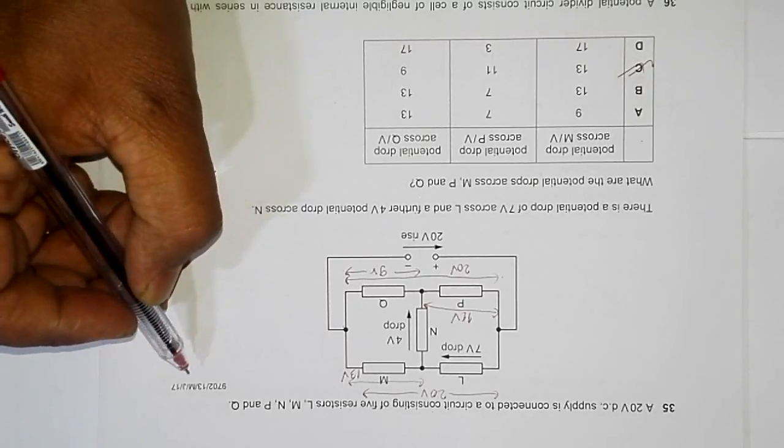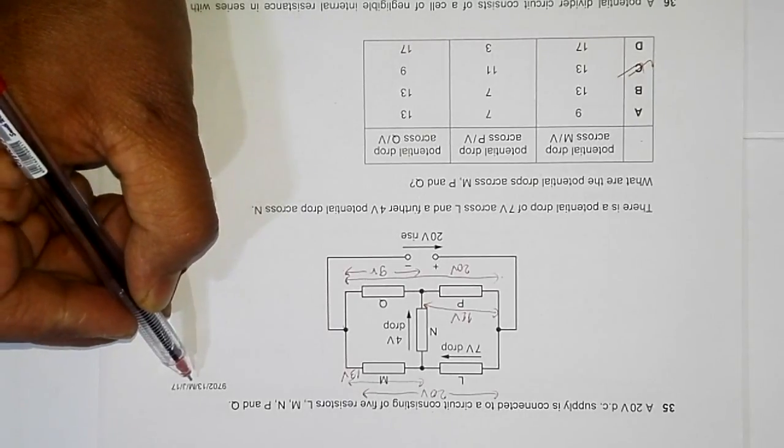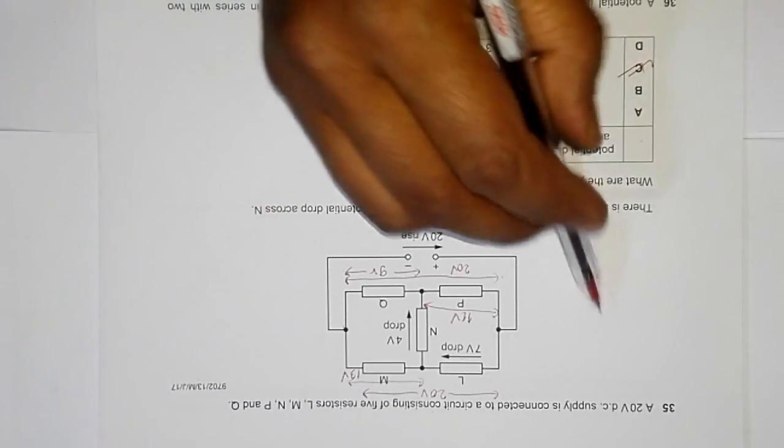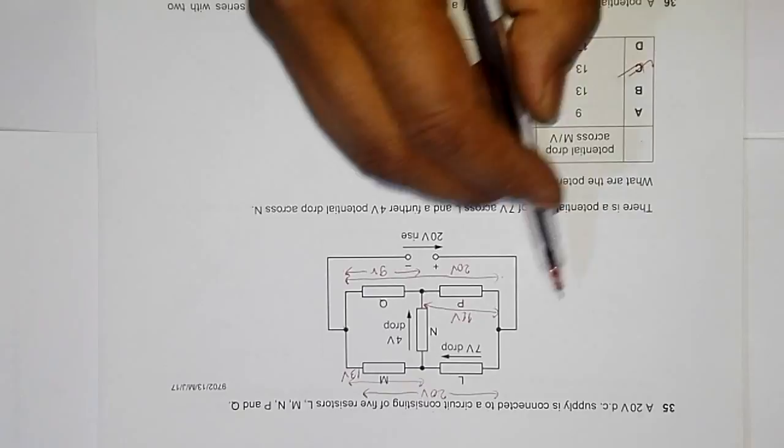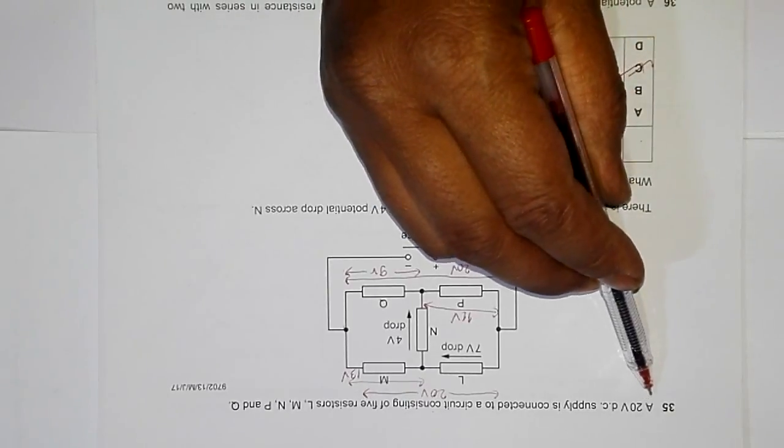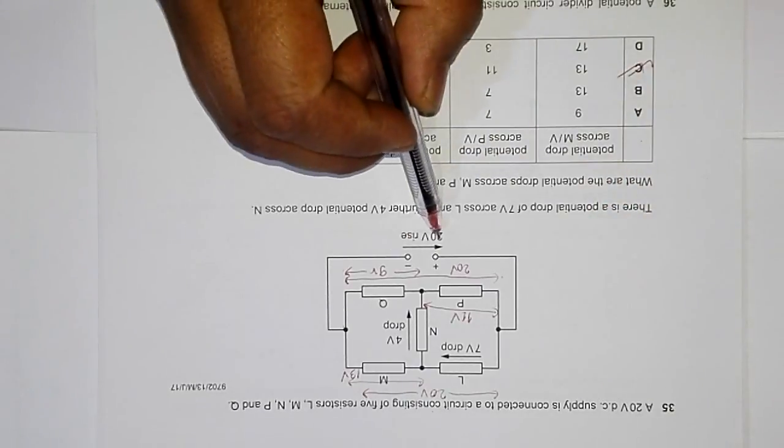This is the question of 2017 May June paper 1-3 and the question number is 35. It shows a Wheatstone Bridge circuit here and it says that a 20 volt DC supply, which is shown here, is connected to a circuit.